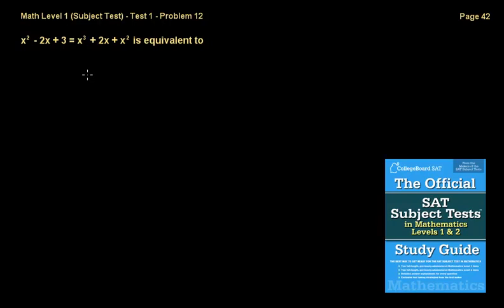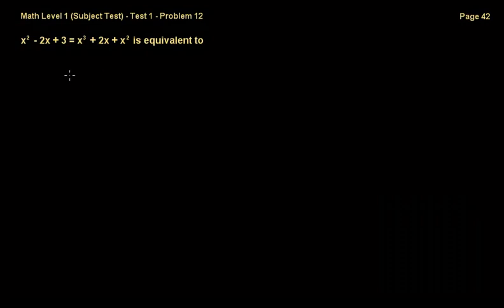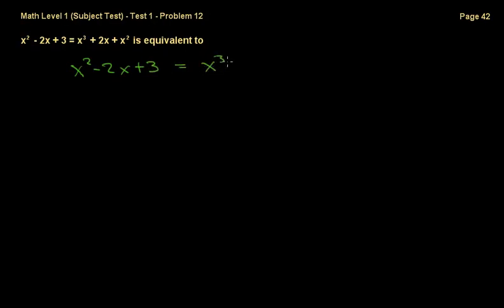Welcome back everybody. We're now in problem 12 and the question is: x squared minus 2x plus 3 is equal to x cubed plus 2x plus x squared. What is that equivalent to? So let's just write this down: x squared minus 2x plus 3 is equal to x to the third plus 2x plus x squared.